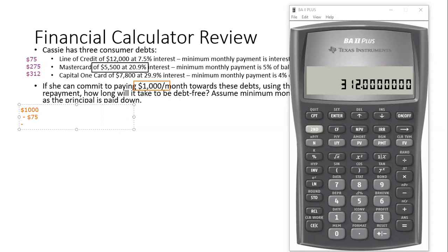We know Cassie has this $1,000. She's going to make her minimum payments on her cards. She's going to shuffle $75 over to that line of credit, and $312 over to the Capital One card. We can do it on the calculator. We'll do $1,000 minus $75 minus $312. We can see that then she's got $613 available to put towards this MasterCard.